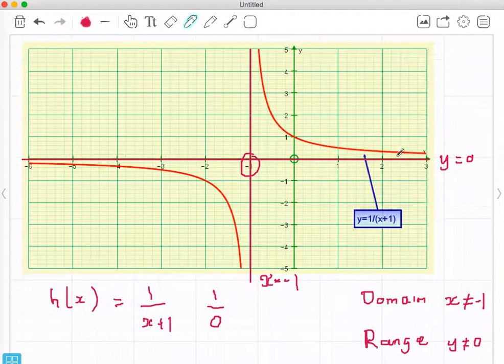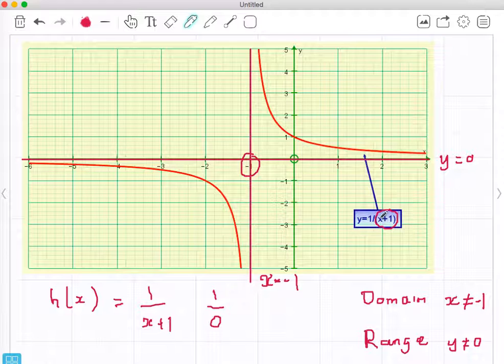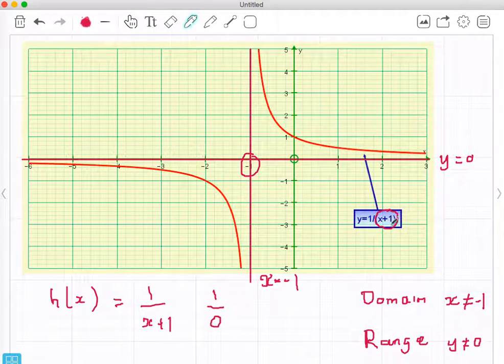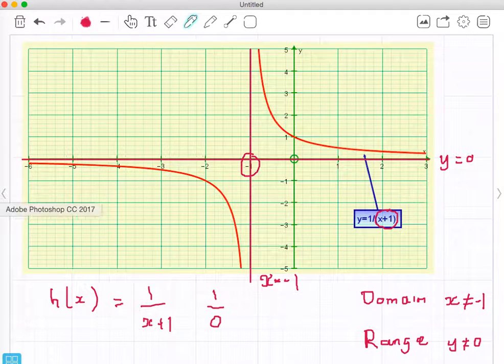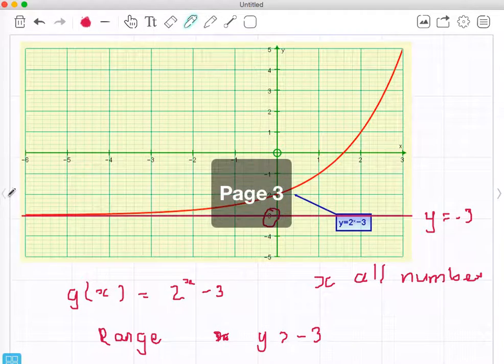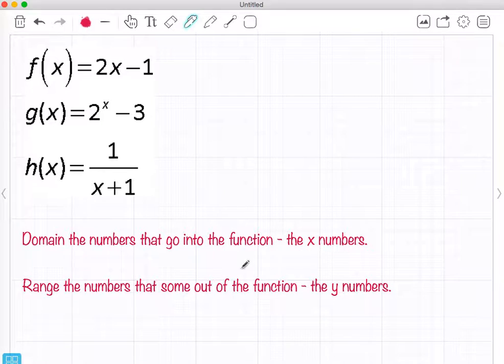So I can see graphically straight away my domain and range. If I wasn't sure, if I didn't have a graph, I'd think about what I can't divide by and that's 0, and so I make x negative 1. So these two things, domain and range. Domain, the x numbers; range, the y numbers.